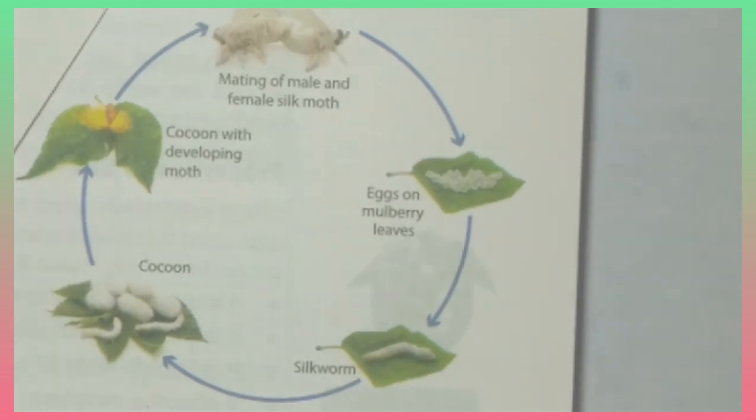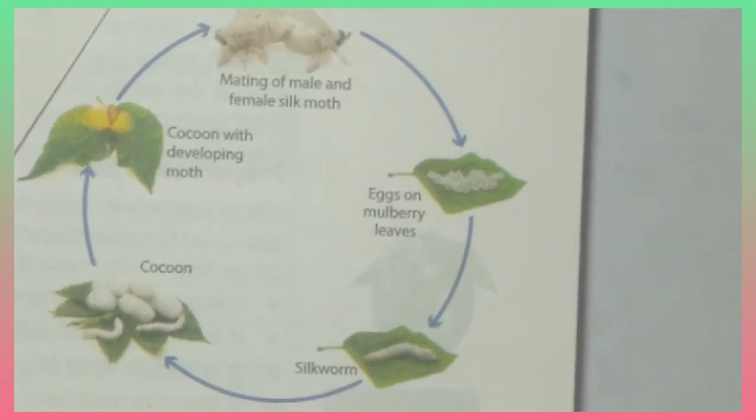The process of covering themselves with this fiber continues to form a cocoon. This larva is called pupa at this stage. This is also called pupa and cocoon. This is the third stage.